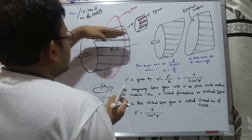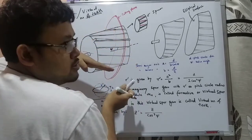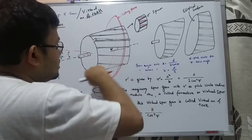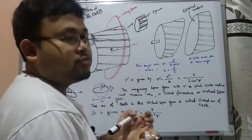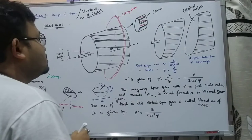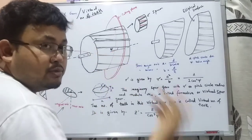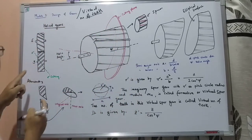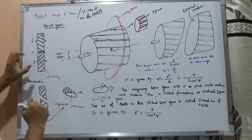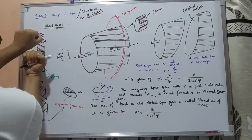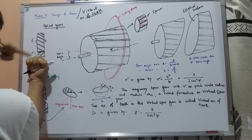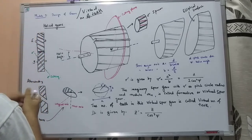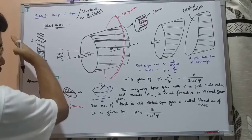We cannot actually modify the teeth because they are fixed. We rather imagine it. From the top view, one gear meshes with another — they have right-hand and left-hand helix so they can mesh. If we take a cutting plane, the cross-section will look like an ellipse.